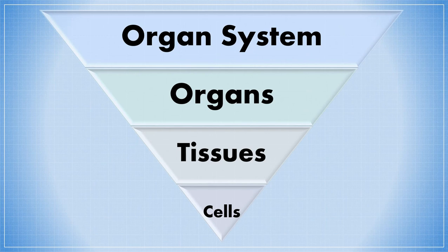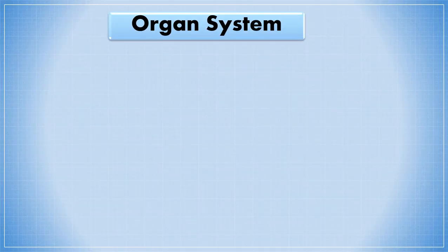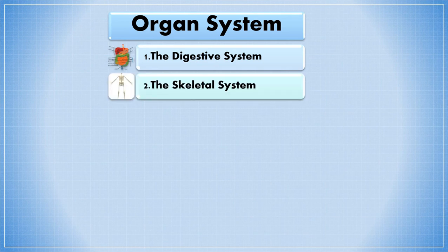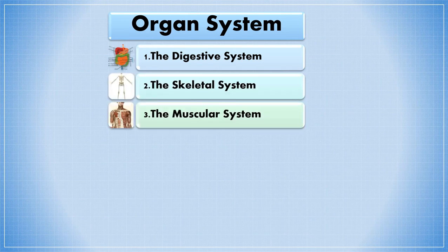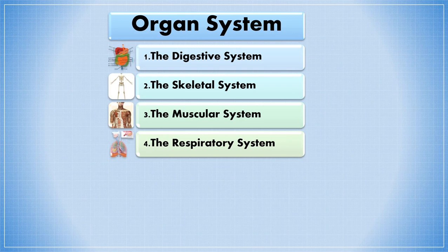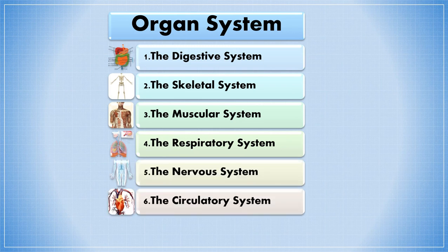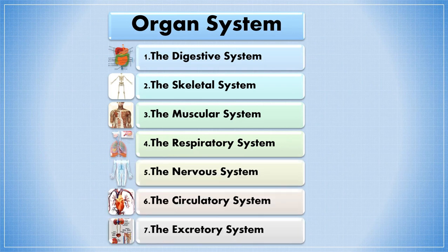The different organ systems that we are going to talk about in this chapter are the digestive system, the skeletal system, the muscular system, the respiratory system, the nervous system, the circulatory system, and the excretory system.